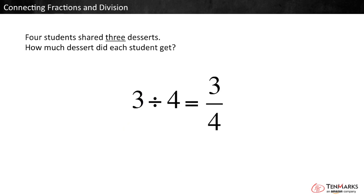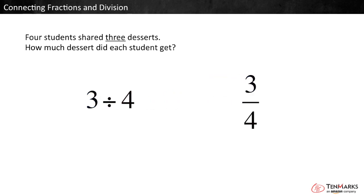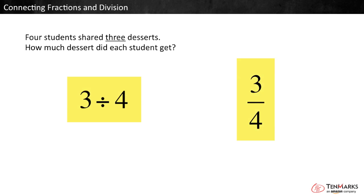So 3 divided by 4 equals 3 fourths. Notice the numbers in this equation. Again, 3 is both the dividend and the quotient's numerator. 4 is both the divisor and the quotient's denominator. The fraction bar takes the place of the division sign and means divide. So writing 3 divided by 4 is the same as writing 3 fourths, and both can represent this word problem.